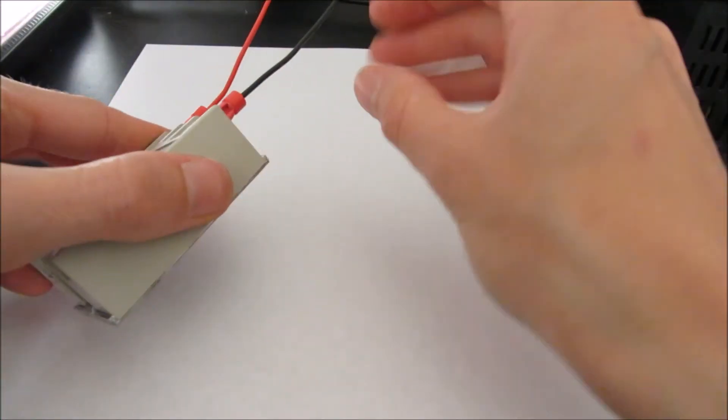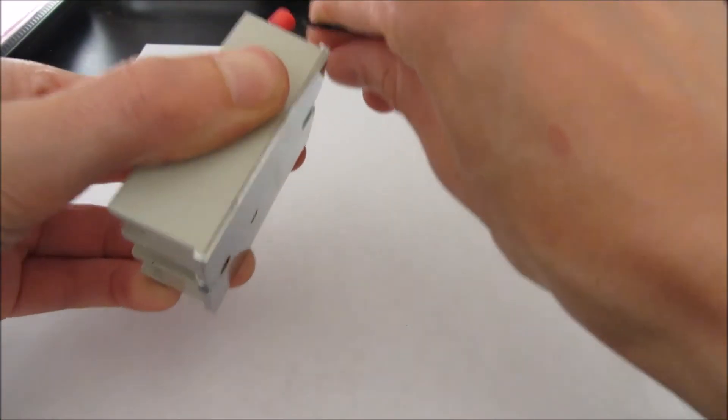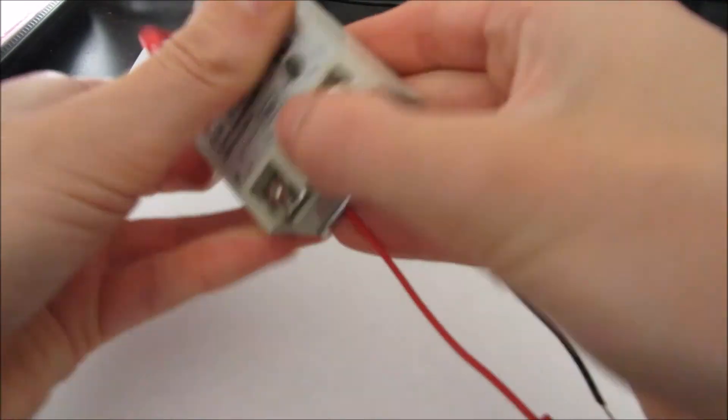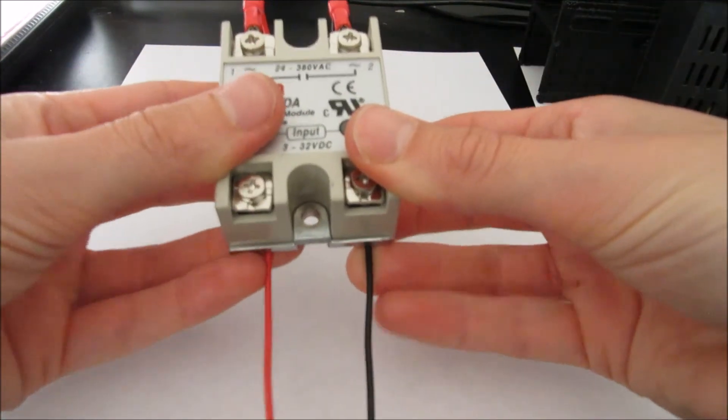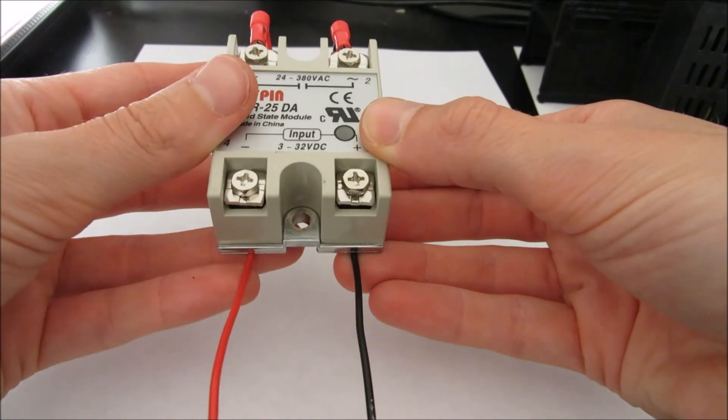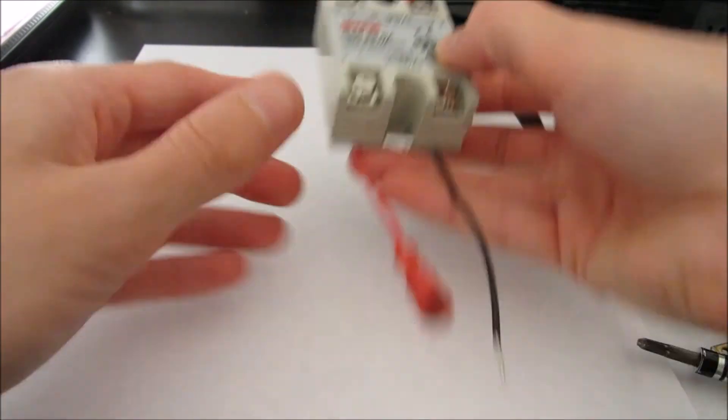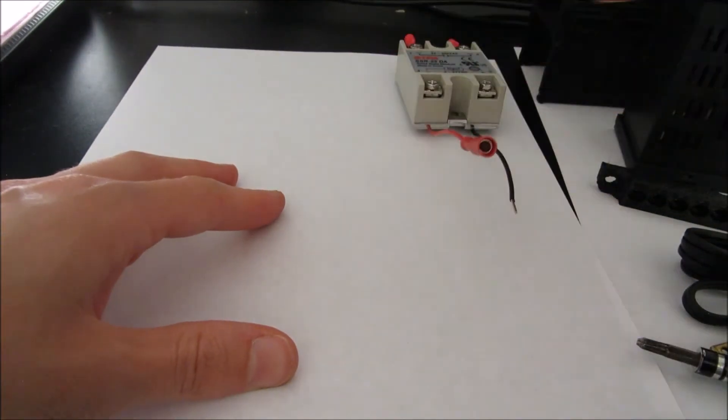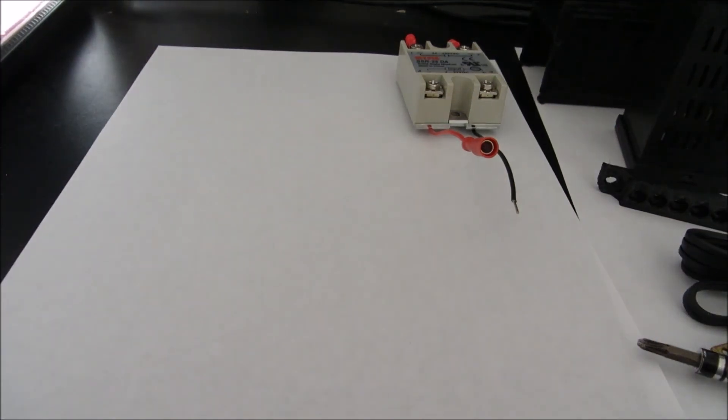So we're going to take our wires now and we're going to fold them over and behind like so. And this will be important later. So for now, we're going to put this relay with these two wires to the side up here. And we'll come back to this in a little bit.